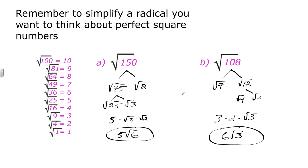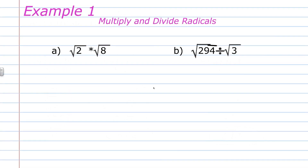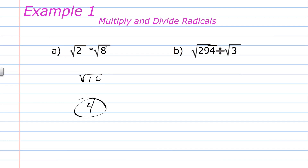Now we're going to multiply and divide radicals, to review what to do when you multiply two square roots. In part a, we have the square root of 2 times the square root of 8. We could factor these first and do a lot of work, or we could just multiply them: 2 times 8 under the square root gives the square root of 16, which is 4. So the square root of 2 times the square root of 8 ultimately becomes 4.